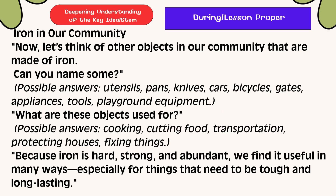Now, let's think of other objects in our community that are made of iron. Can you name some? Here are the possible answers: utensils, pans, knives, cars, bicycles, gates, appliances, tools, and playgrounds. What are these objects used for? They are used for cooking, cutting food, transportation, protecting houses, and fixing things. Because iron is hard, strong, and abundant, we find it useful in many ways — especially for things that need to be tough and long-lasting.